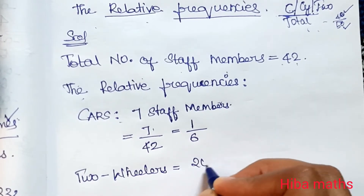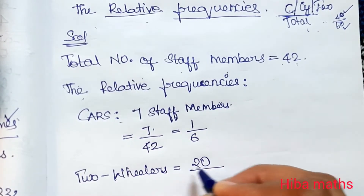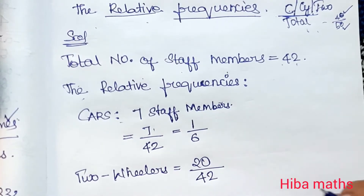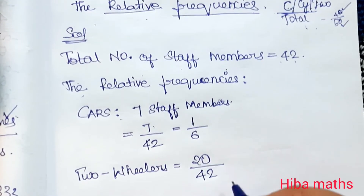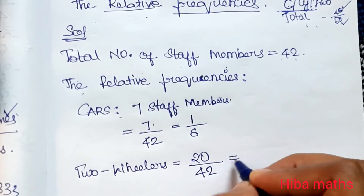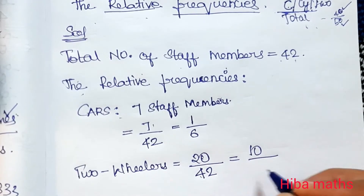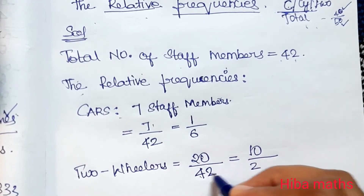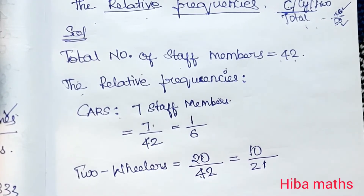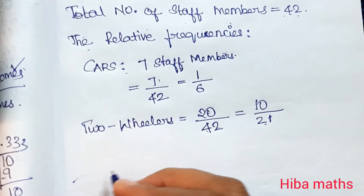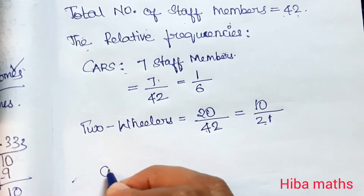2-wheelers: 20. Total number of staff is 42. 20 by 42 — 2 ones are 2, 2 twos are 4, 2 ones are 2 — so 10 by 21. 2-wheelers relative frequency is 10/21.